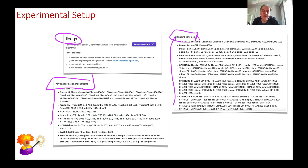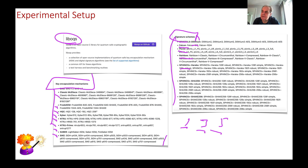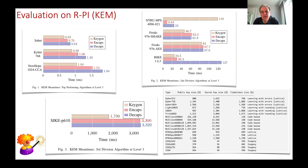The library supports signature schemes including SPHINCS+, Rainbow, Picnic, Falcon, and Dilithium, and for key exchange: McEliece, FrodoKEM, HQC, Kyber, NTRU, NTRU Prime, SABER, and SIKE. Within each method, different security levels are defined: Level 1 is the baseline at 128-bit equivalent security (like AES-128), Level 3 is 192-bit, and Level 5 is 256-bit. Each implementation provides a variant for each level. The paper shows the impact on the Raspberry Pi, but we also examine raw cycle counts, which relate to total time proportional to clock speed.